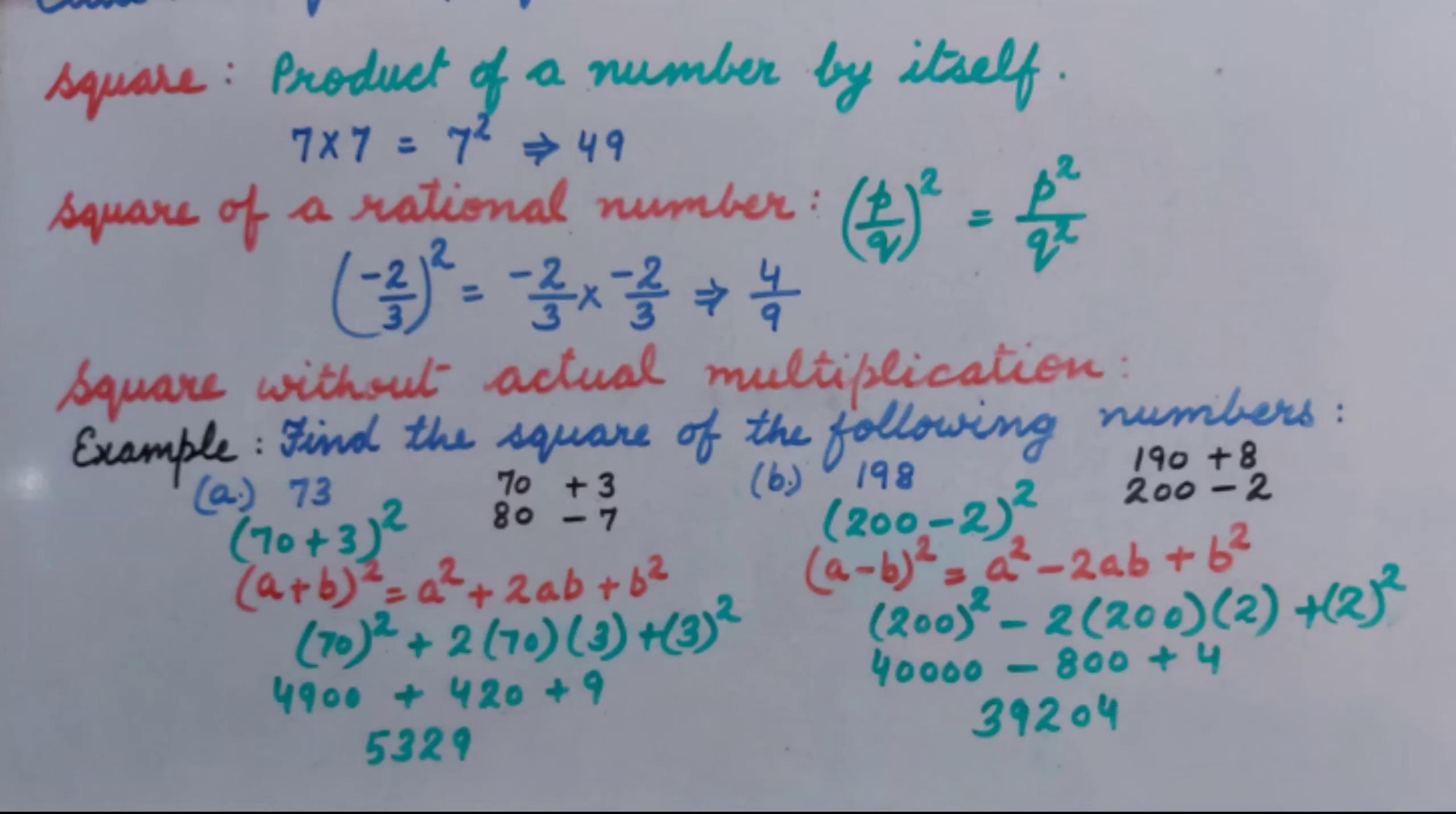Solving, we get 40,000 minus 800 plus 4. So, square of 198 is 39,204.